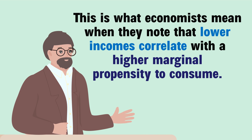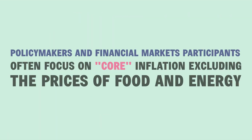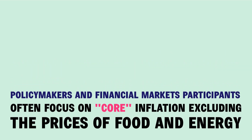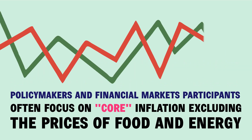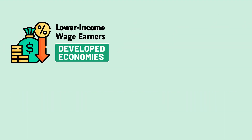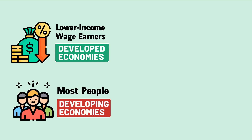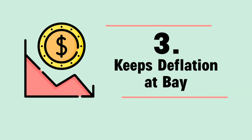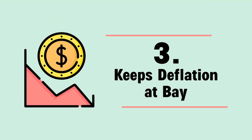Second, inflation hurts the poor disproportionately. Lower-income consumers spend a higher proportion of their income on necessities and have less cushion against the loss of purchasing power — this is what economists call a higher marginal propensity to consume. Lower-income wage earners in developed economies and most people in developing economies spend a relatively large proportion of their budgets on food, energy, and commodities that are hard to substitute.